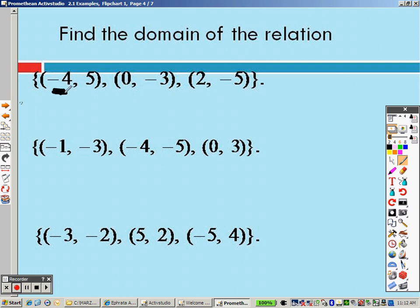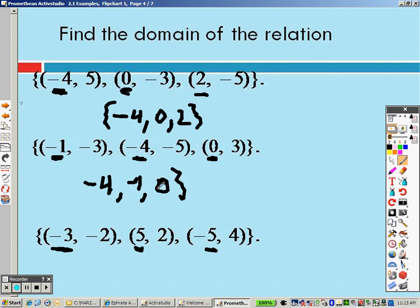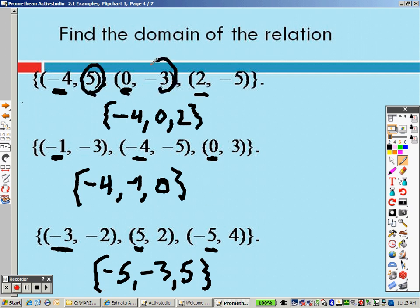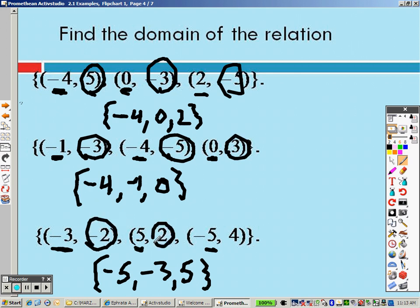So if I find the domain, the x's here, that's my domain. There's my domain for this one, and here's my domain for this one. So if I wanted to write it in order, negative 4, 0, 2. Write this in order from least to greatest would be negative 4, negative 1, 0. So there is the domain for that one. Negative 5, negative 3, and 5 from lowest to highest would be the domain for that one. Once again, the range would be the y's. So there is your range, there is your range for that one, and there is your range for that one.